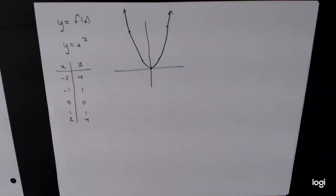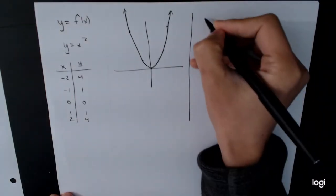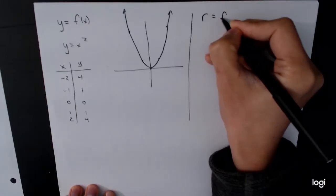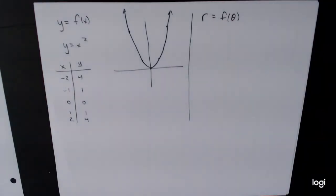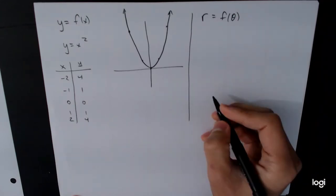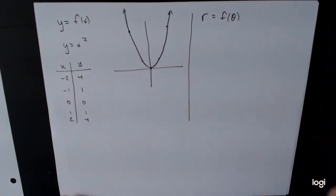And this was graphing by plotting points. And so what we're going to do is we're going to take this idea, but we're going to extend it. Instead of looking at rectangular graphs, we're going to look at things like r is equal to f(θ). So theta will be our input value and r will be the output value. And this will give us a different type of graph.